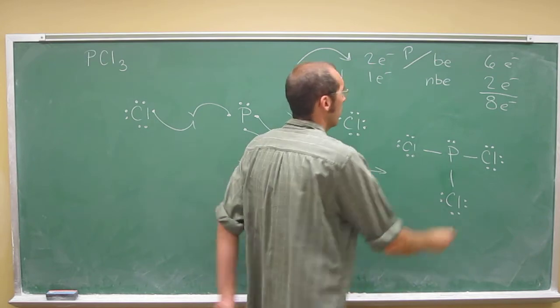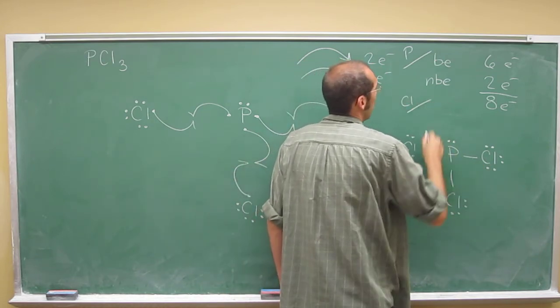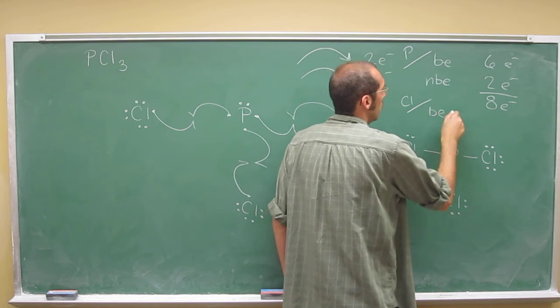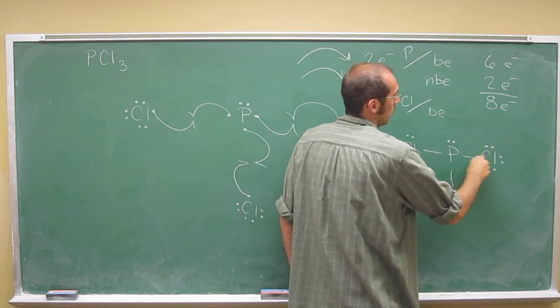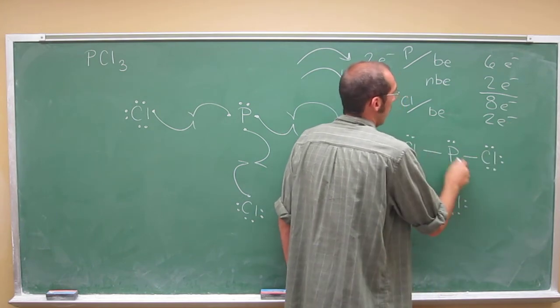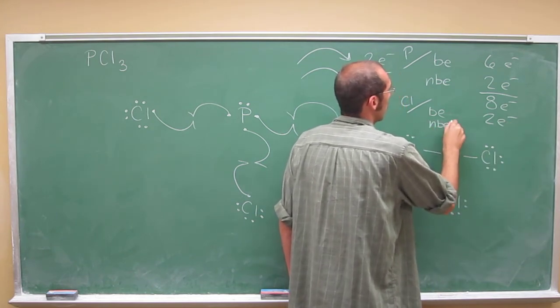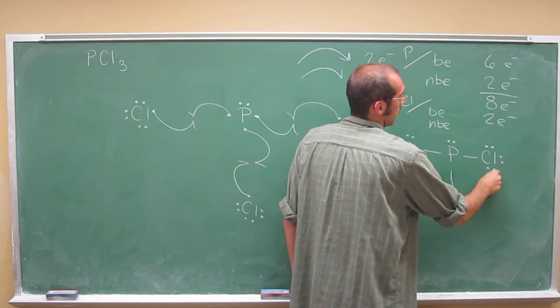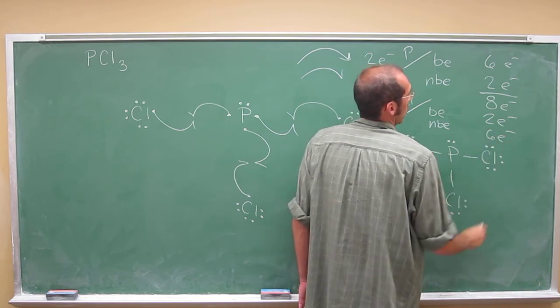We can do the same around the chlorines, too, in this case. Right? So the bonding electrons, how many are there? Just the one bond, so just two electrons. And how many non-bonding electrons? Well, two, four, six.